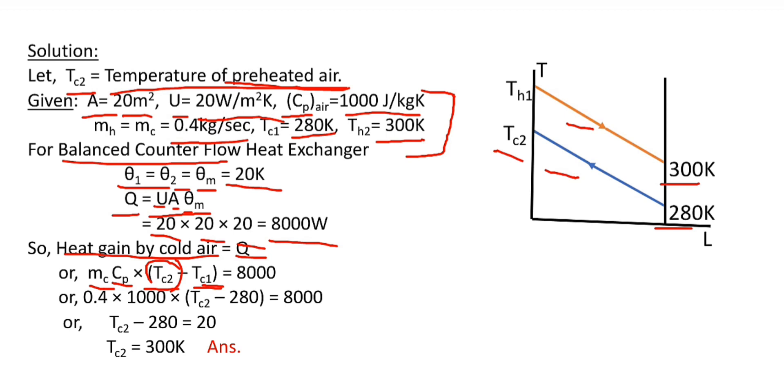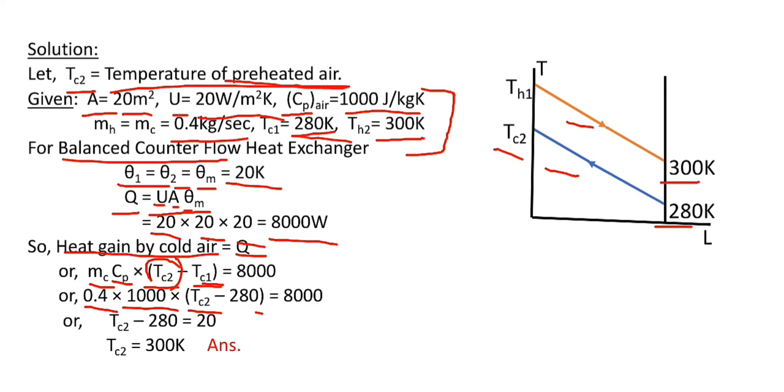So it becomes 0.4 × 1000 × (TC2 - 280) = 8000. After calculating this equation